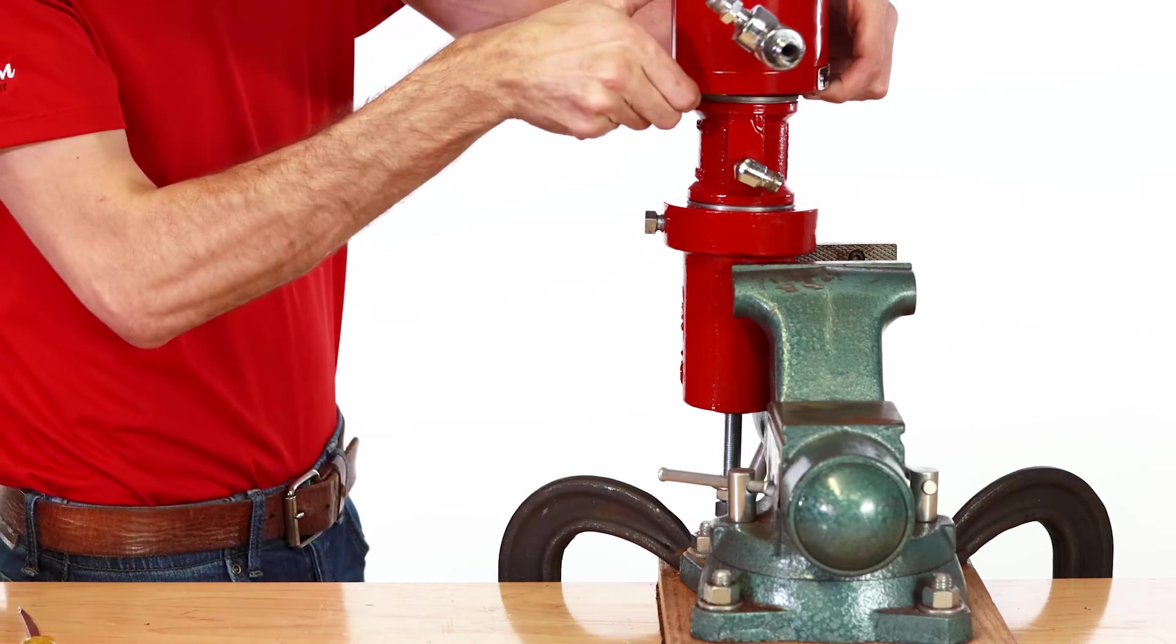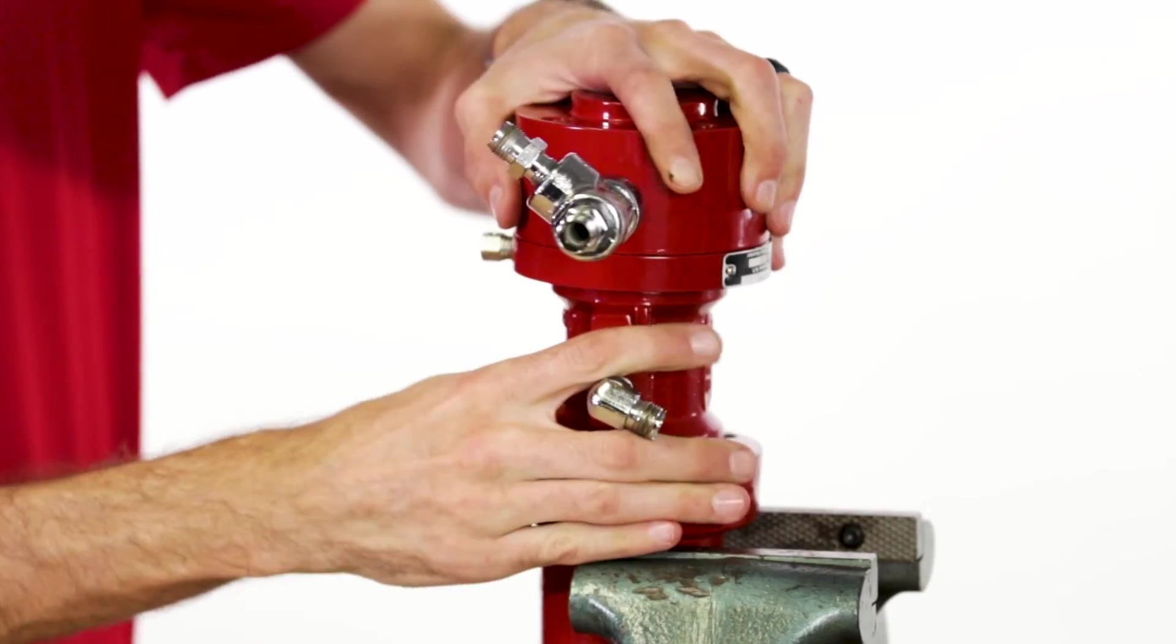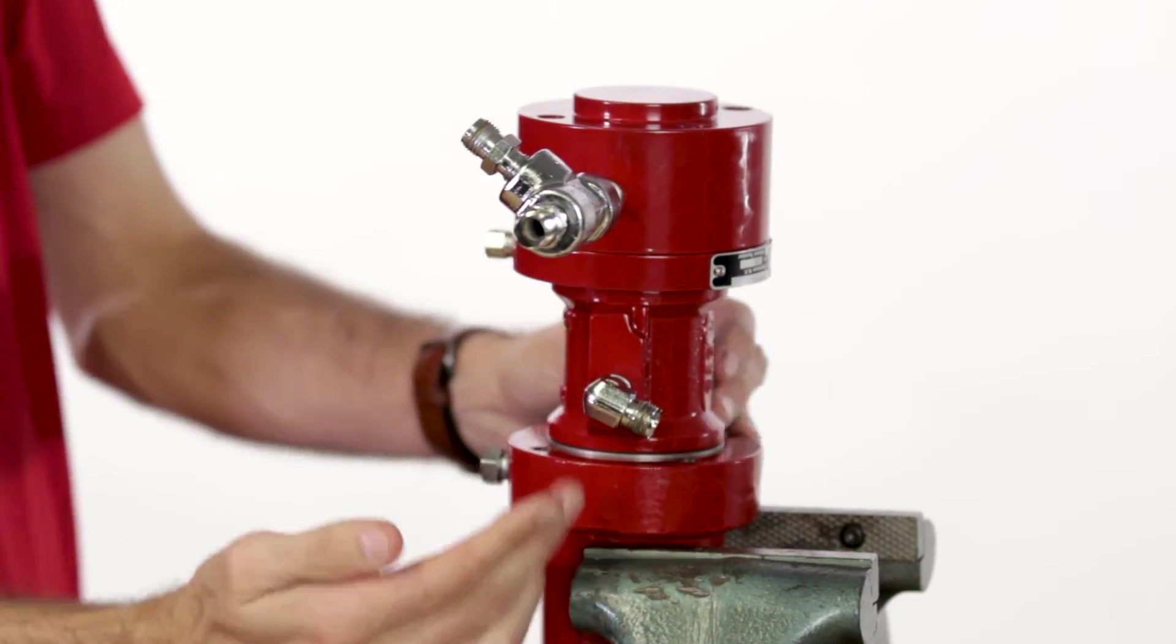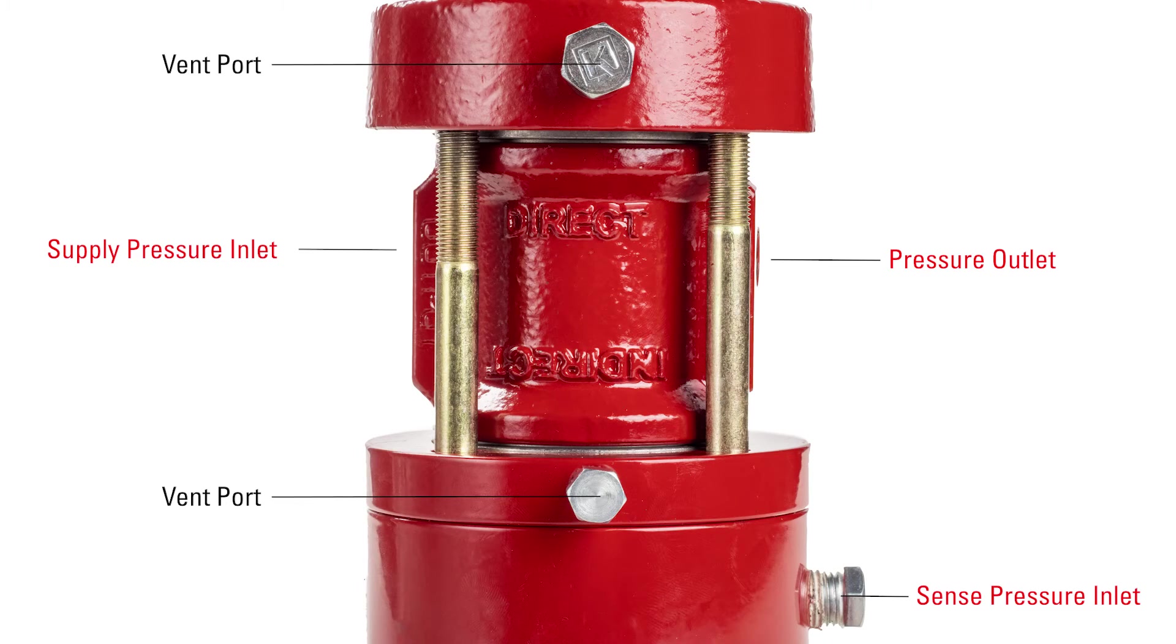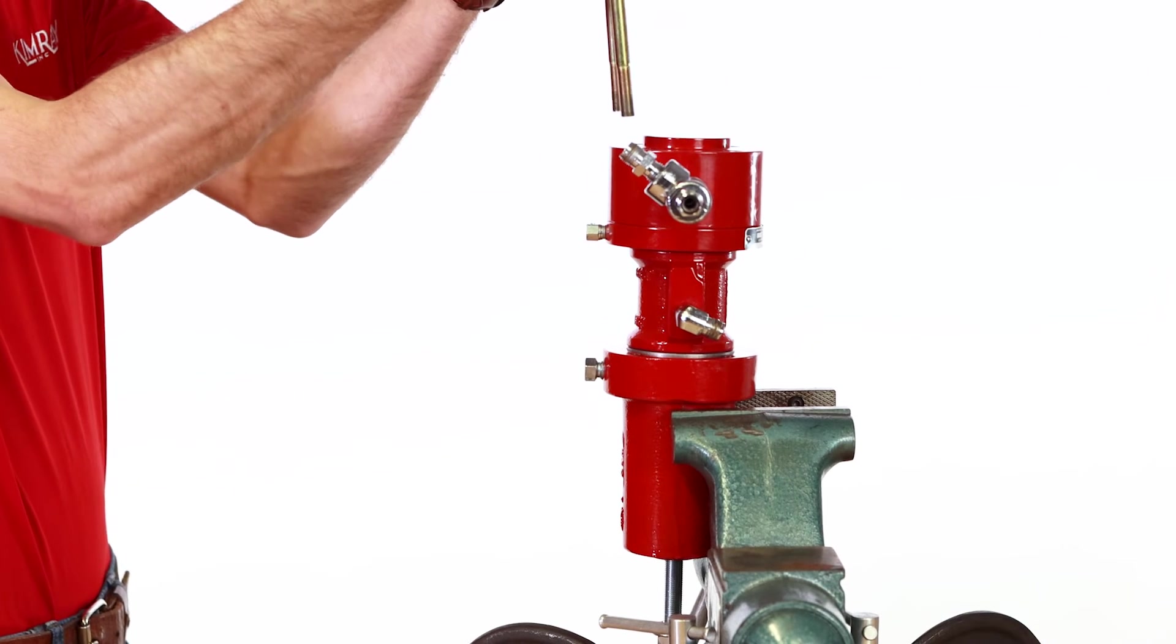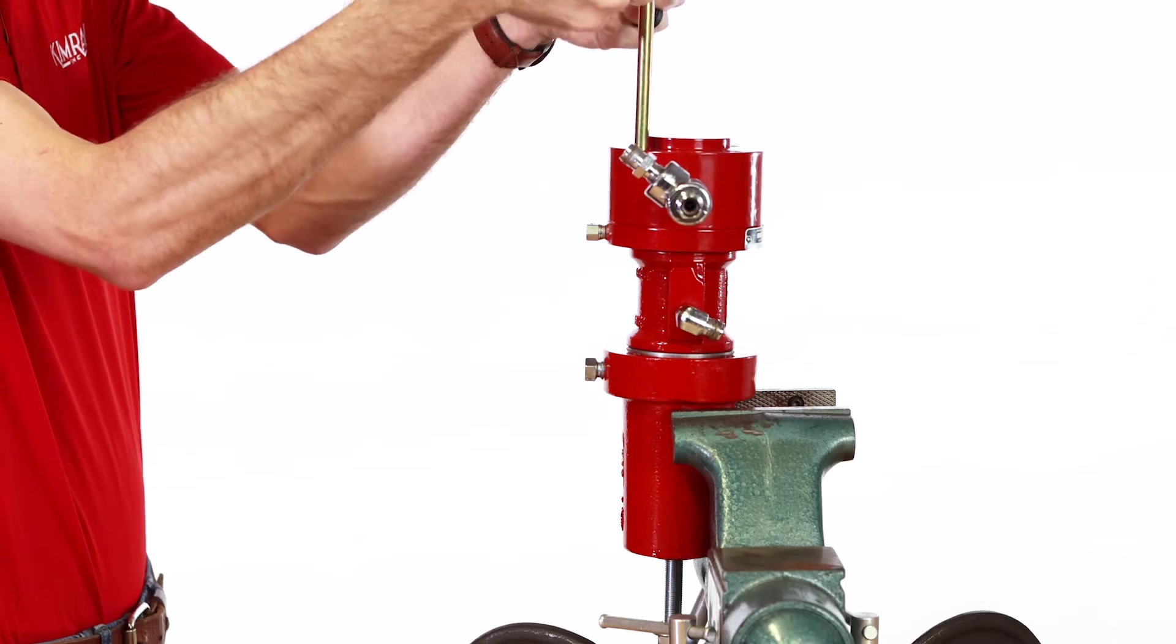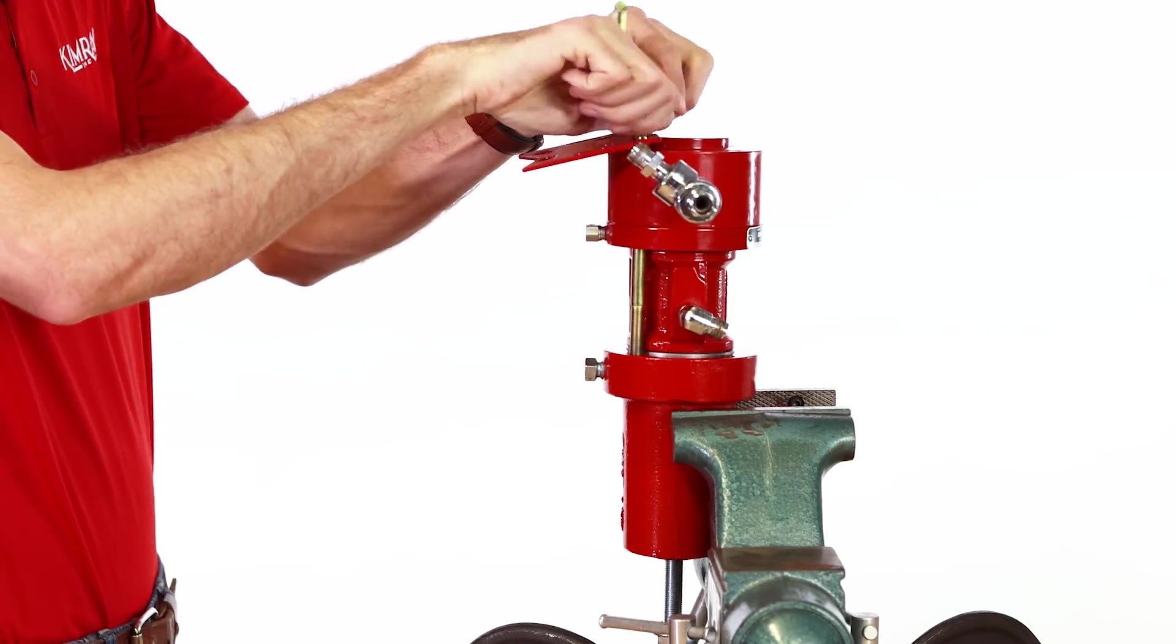Using your markings align the bonnet, pilot, housing and body. Align the sense holes with the supply and output holes. The inlets and outlets will be 90 degrees from the vent port. Replace the screws and bracket and tighten with the crisscross pattern evenly distributing the pressure as you tighten.